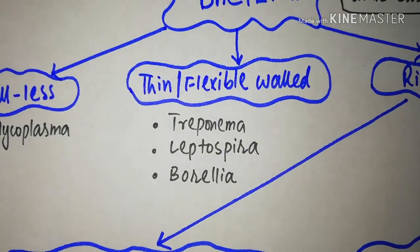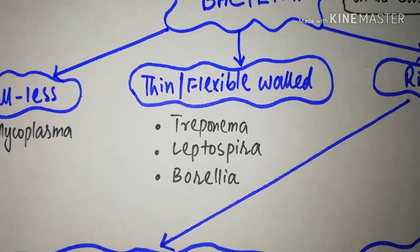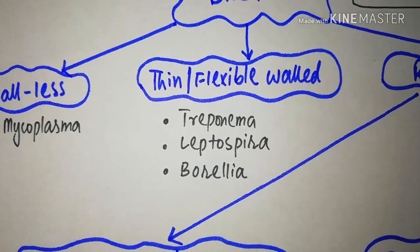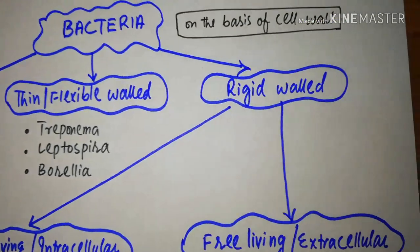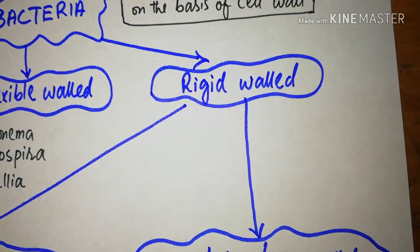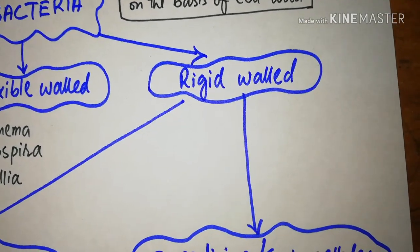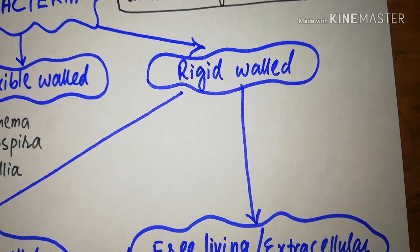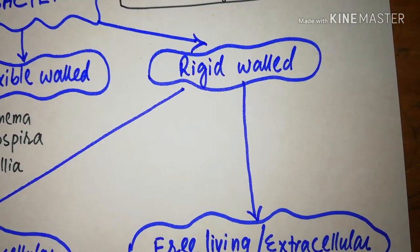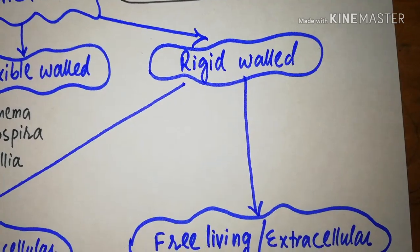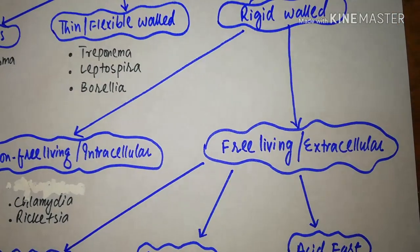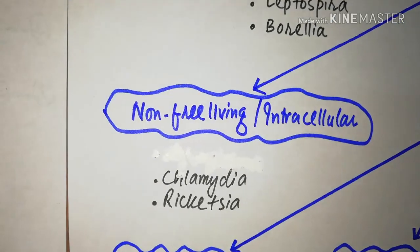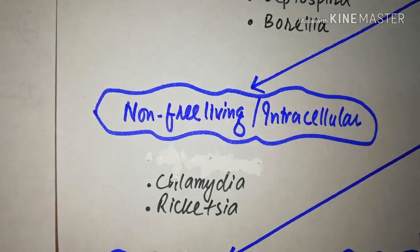The thin or flexible wall bacteria includes the spirochete species — the Treponema, Leptospira, and Borrelia. The third group, the rigid walled bacteria, is a large group and so needs a second base of classification — that is the free living or extracellular bacteria and the non-free living or intracellular bacteria. The non-free living includes chlamydia and rickettsial species.